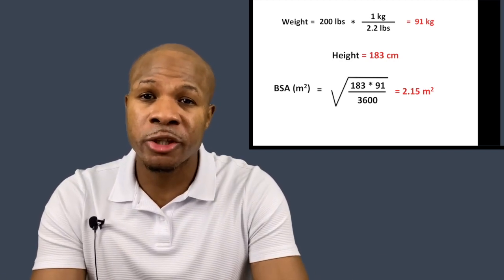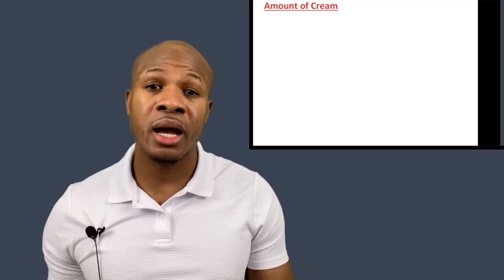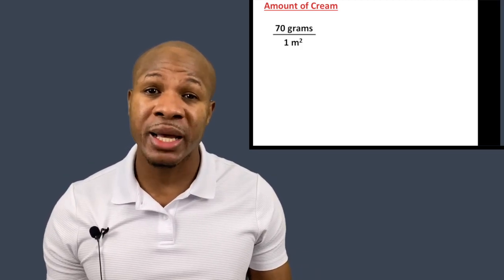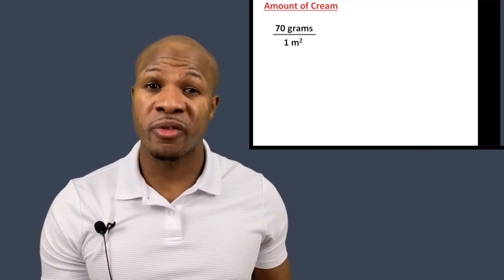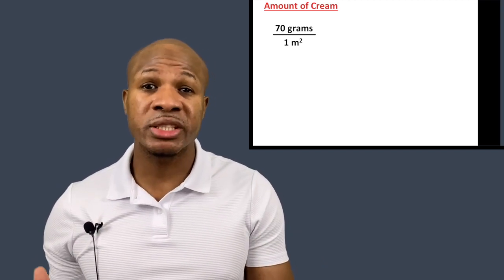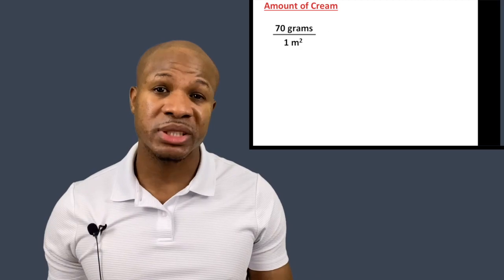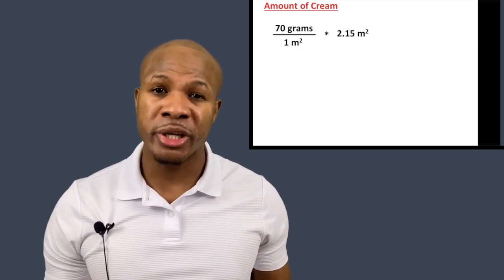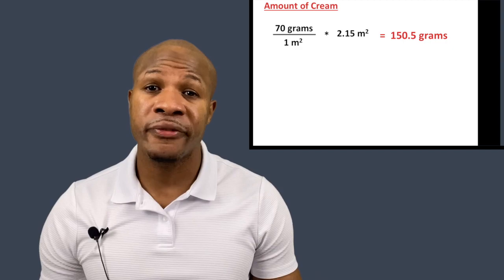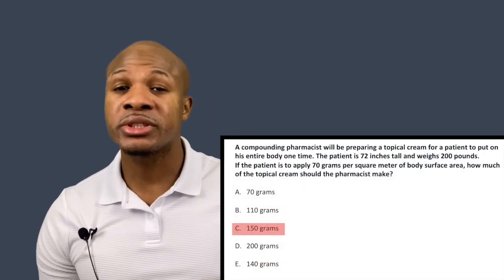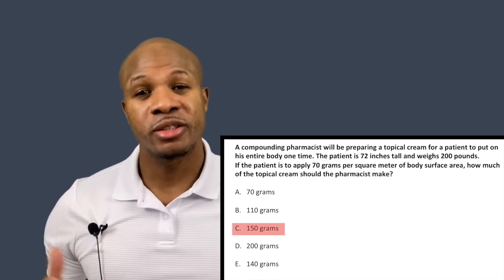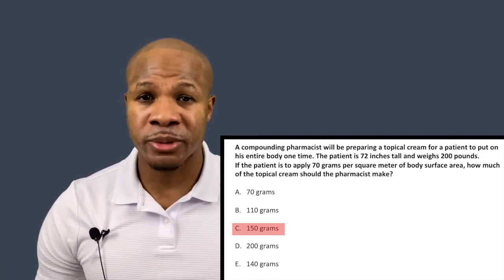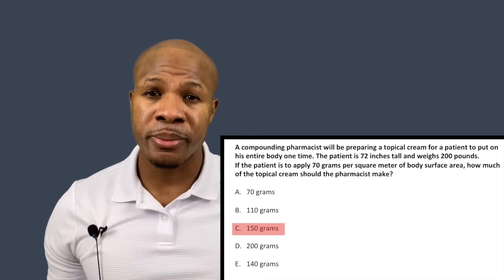Now we know the patient's body surface area is 2.15 meters squared. We're told the patient applies 70 grams of cream per square meter of body surface area, so we multiply 70 grams times 2.15 square meters to get 150.5 grams. The closest answer is answer choice C — 150 grams. It will take 150 grams of cream to cover the entire body surface area of this patient, and that's how you solve this problem.